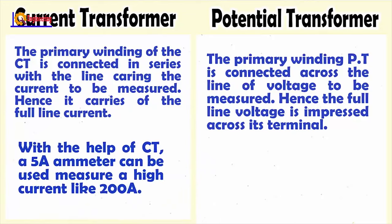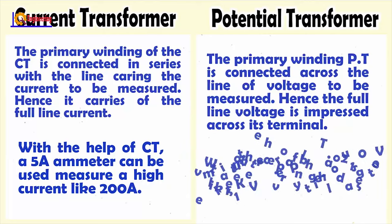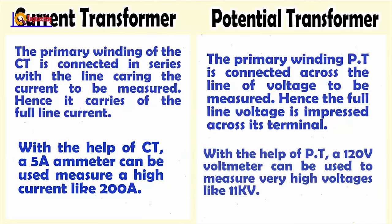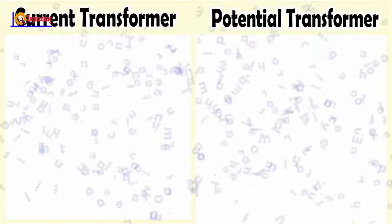With the help of a current transformer, a 5A ammeter can be used to measure a high current like 200A. With the help of a potential transformer, a 120V voltmeter can be used to measure very high voltages like 11kV.